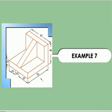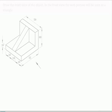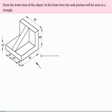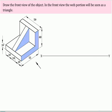Example problem. Draw the front view of the object. In the front view, the web portion will be seen as a triangle.